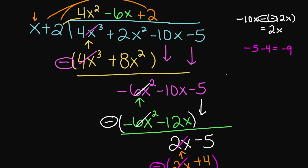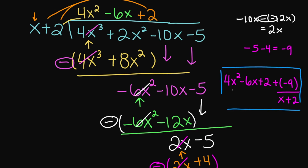Your quotient is 4x squared minus 6x plus 2, plus your remainder negative 9 over x plus 2. So we have our quotient, our remainder, and our divisor. This is your final answer.